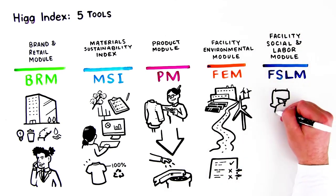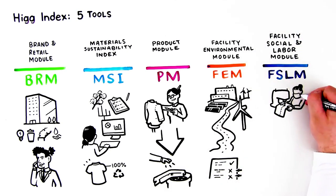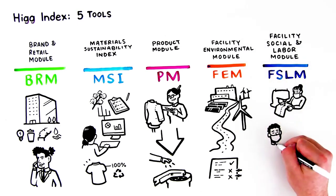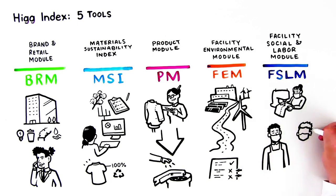And finally, the HIG Facility Social and Labor Module, or FSLM, allows facilities to assess conditions for its workers, helping ensure they're creating safe and fair working conditions.